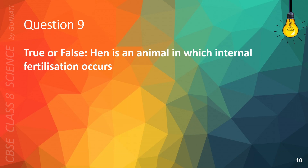Question 9. True or false: Hen is an animal in which internal fertilization occurs. The correct answer is A. True.